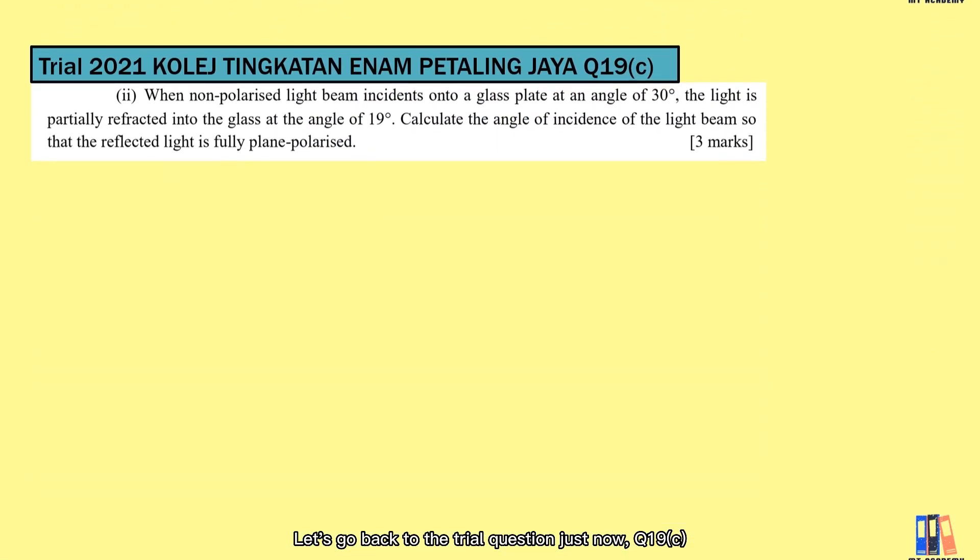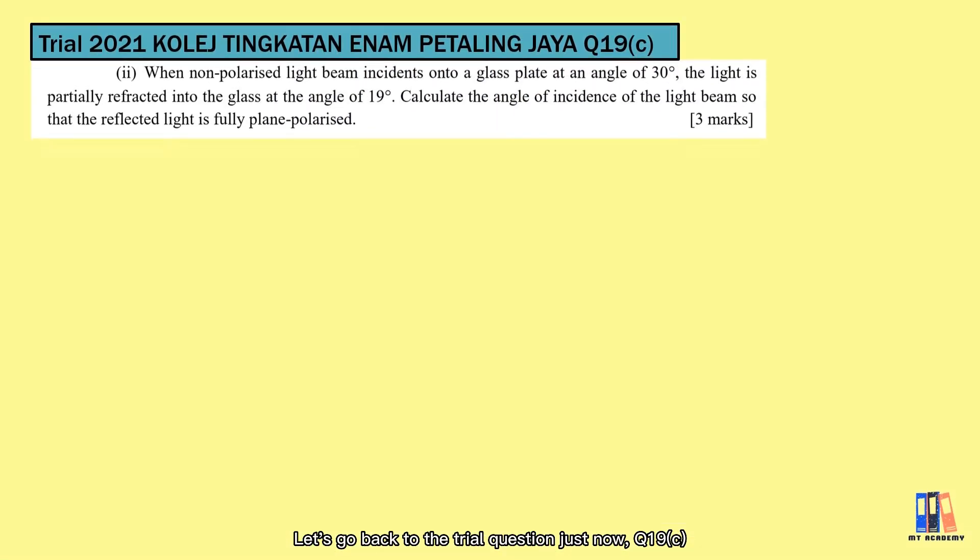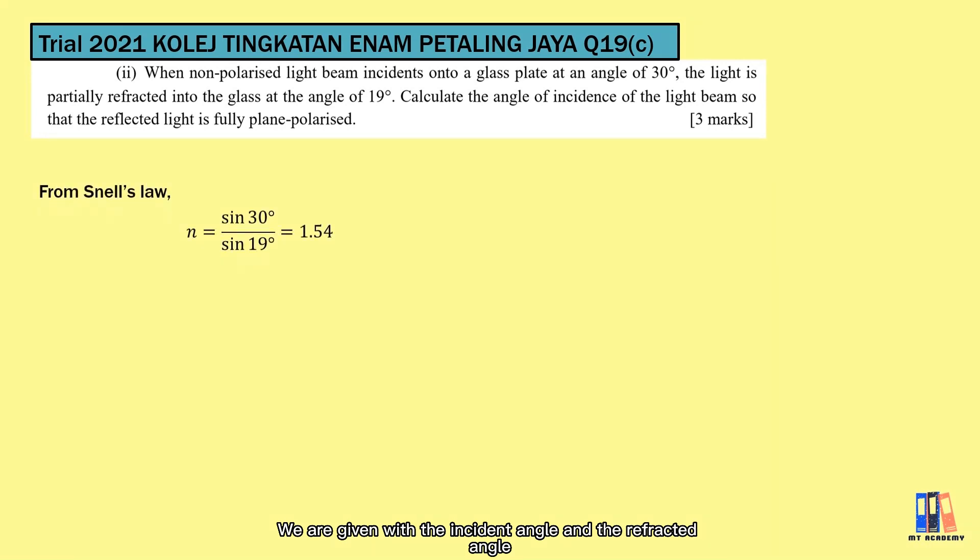Let's go back to the trial question just now, question 19c. When non-polarized light beam is incident onto a glass slab at an angle of 30 degrees, the light is partially refracted into the glass at an angle of 19 degrees. So why does the question tell you about this information? We are given the incident angle and the refracted angle, so we can apply Snell's law to get the refractive index of the medium.